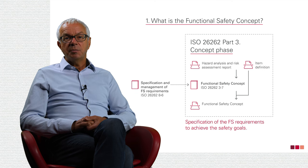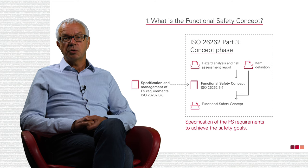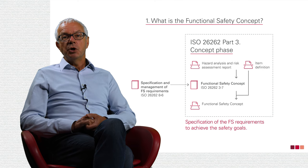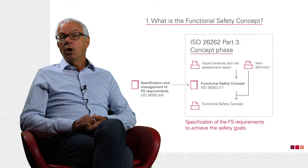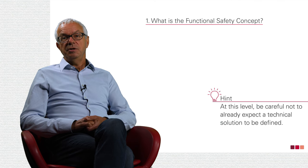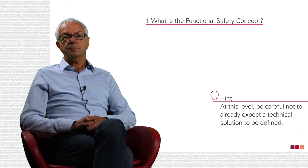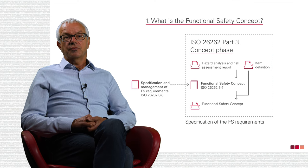In specific terms, the functional safety concept consists of functional safety requirements. For example, this could be a requirement that the adaptive cruise control system must be switched off in a controlled manner after x seconds if there is no reliable information as to whether a driver still has their hands on the steering wheel. Or that the automatic park assist system can only be activated when the vehicle is stationary. At this level, be careful not to already expect certain technical solutions to be defined. Safety requirements are not enough by themselves, however, as we know from ISO 26262.